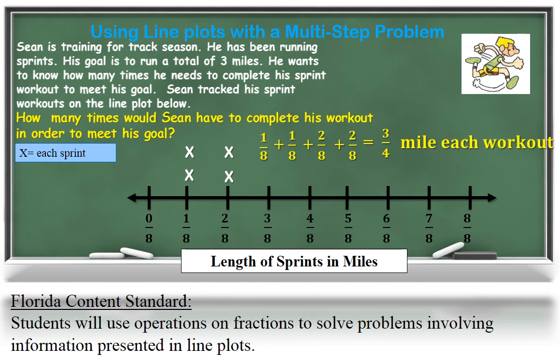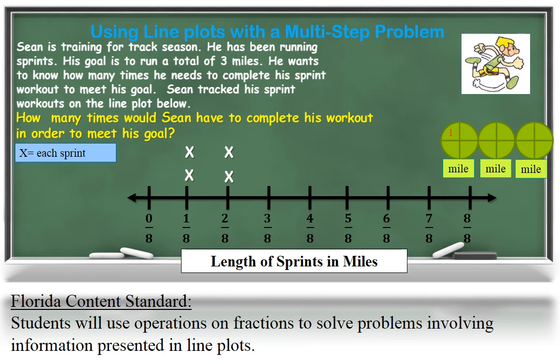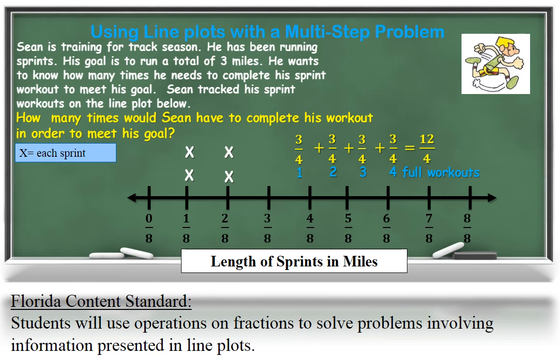A student might use a model to help explain their thinking. If I use each of these circles to represent a whole mile and then I split them into 4ths, since I want to know how many groups of 3/4ths I need to run 3 miles, I see that there are 1, 2, 3, 4, 5, 6, 7, 8, 9, 10, 11, 12 fourths in 3 whole miles. And if I split those 12 fourths into groups of 3/4ths, I could see that it would take 4 groups of 3/4ths to give me 12 fourths to make that full 3 miles. So he would have to run his workout of 3/4ths 4 full times in order to meet his goal of 3 miles.